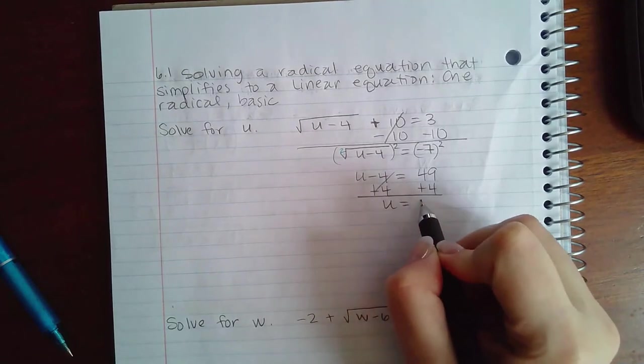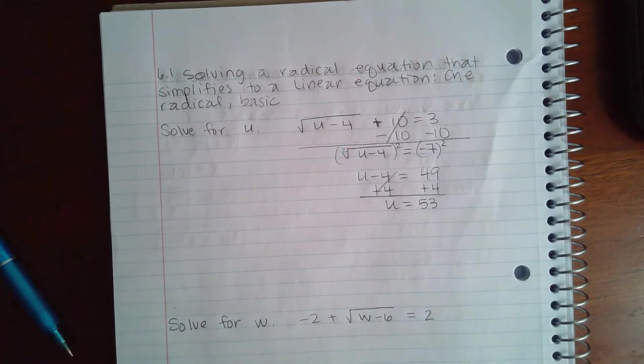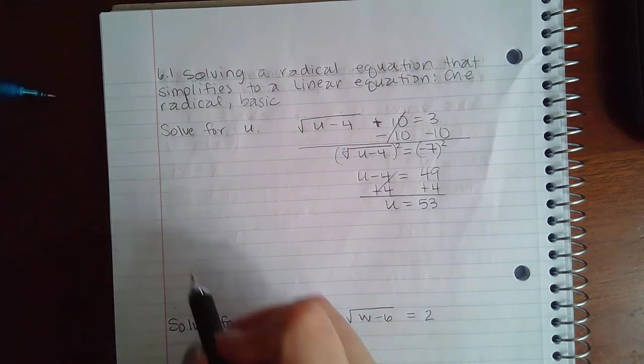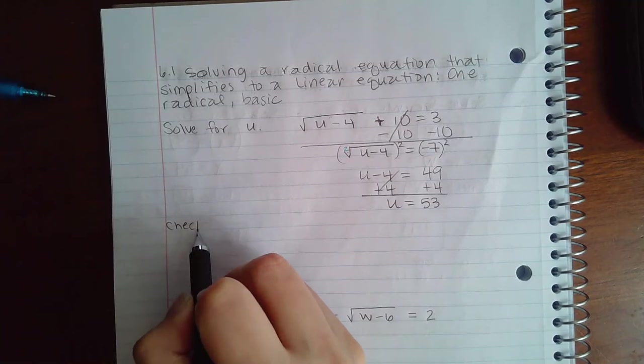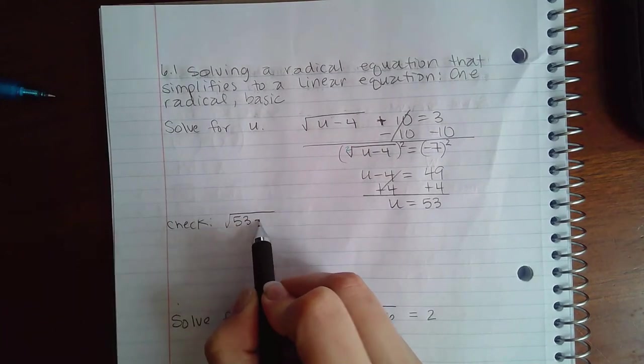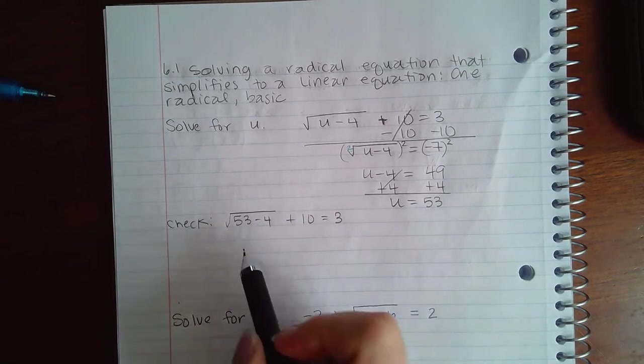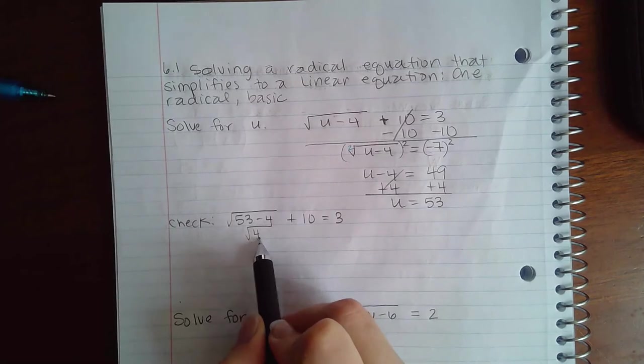So remember when you have an equation with square roots you do have to check your answers. So when I go to check, I'm going to type it into the original problem. So 53 minus 4 is 49.